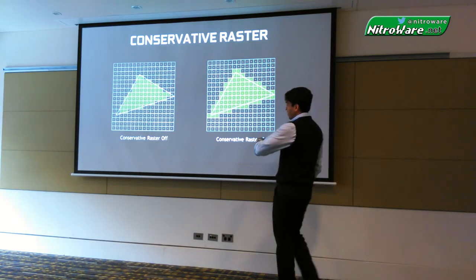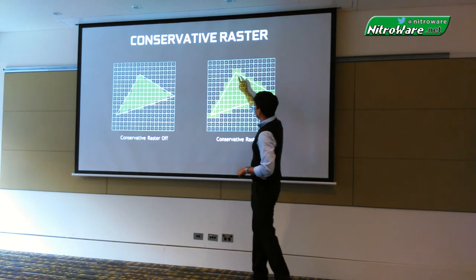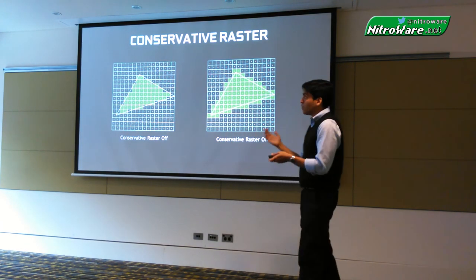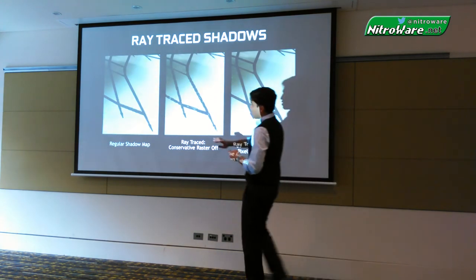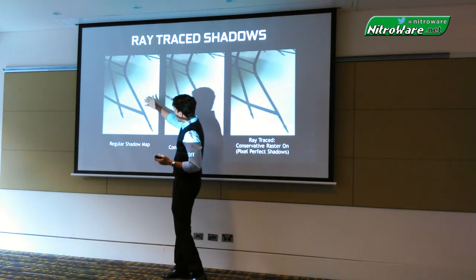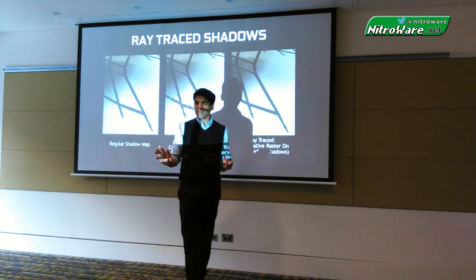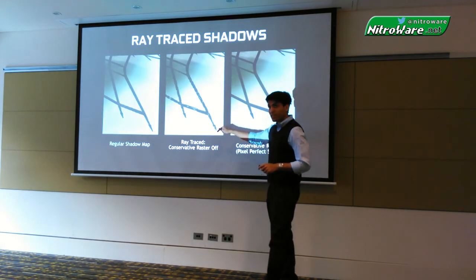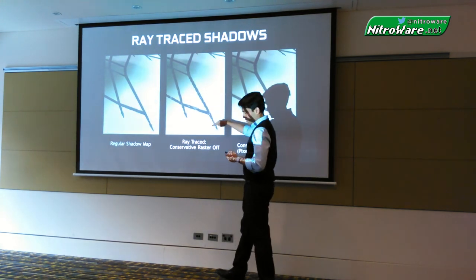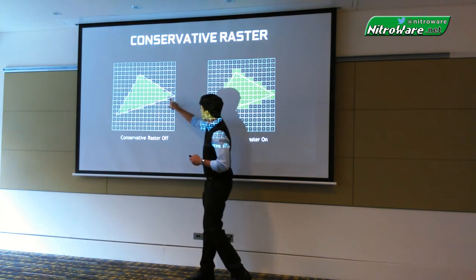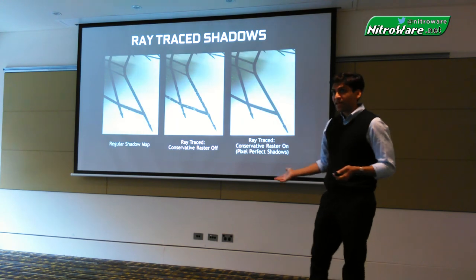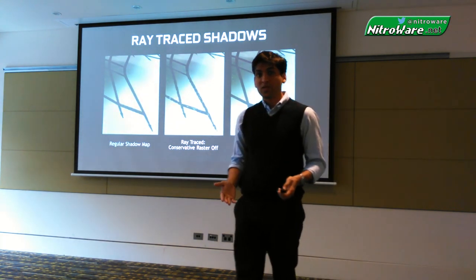The difference with DX12_1 is that with conservative raster on, if a pixel was even touched by the geometry, that pixel was considered to be inside it from a shadow-tracing perspective. Before any ray tracing simulations, shadows appeared pixelated, low resolution — not a good effect. A shadow ray traced with conservative raster off, pre-DX12, shows visible holes in the geometry of the shadow. But this is the sort of shadow you're going to see with DX12_1 features — it's pixel perfect. The 980 Ti is among the only GPUs where you will see this.